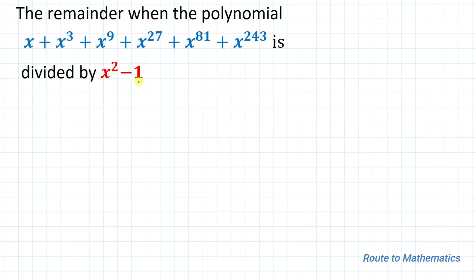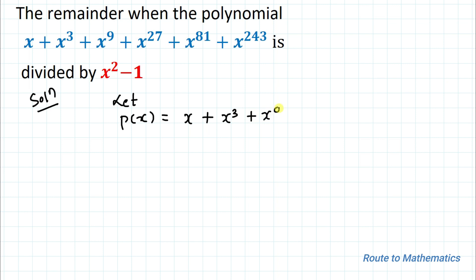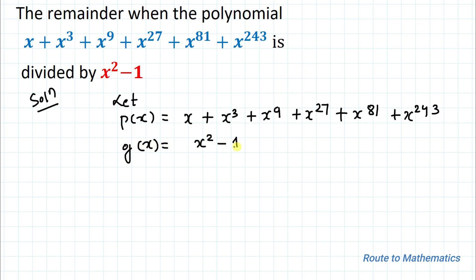We are asked to find the remainder of this given polynomial when divided by x² - 1. Without any delay, let's start the solution. Let's take our given polynomial as p(x) = x + x³ + x⁹ + x²⁷ + x⁸¹ + x²⁴³, and our divisor is g(x) = x² - 1.